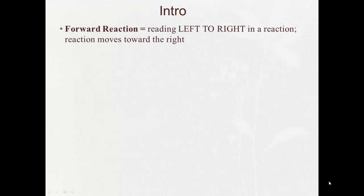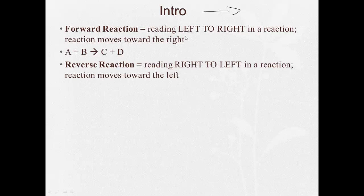A forward reaction is reading left to right in a reaction, showing that the reaction is moving to the right. A reverse reaction would be reading right to left — the reaction moves towards the left. Generally, when a reaction can go either way, we'll have our reactants on the left and that double arrow with our products on the right. When it's going left to right: reactants to products. When it's going right to left, the products turn into reactants and the reactants turn into products.